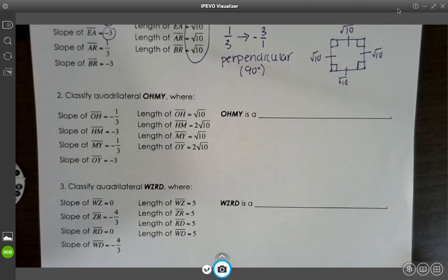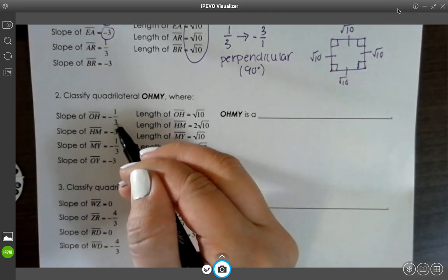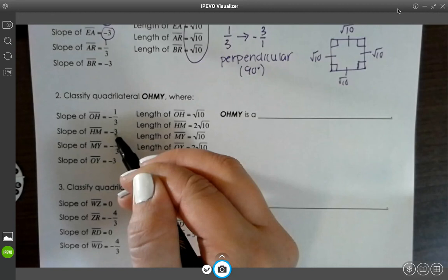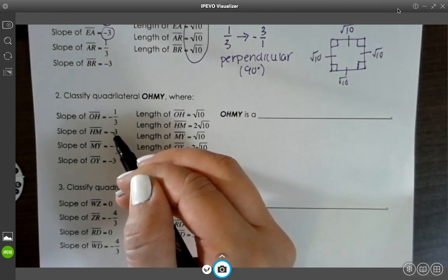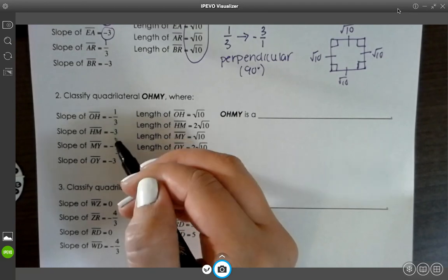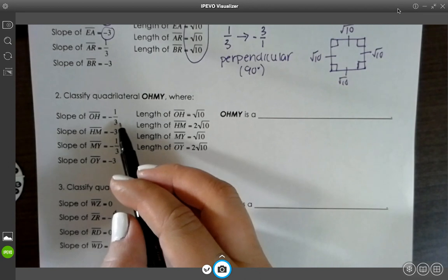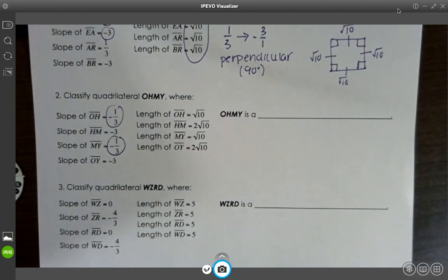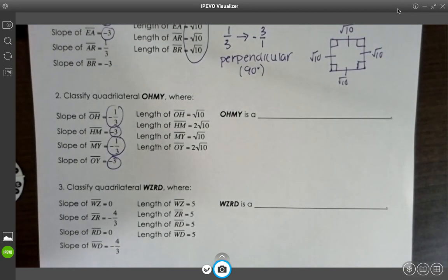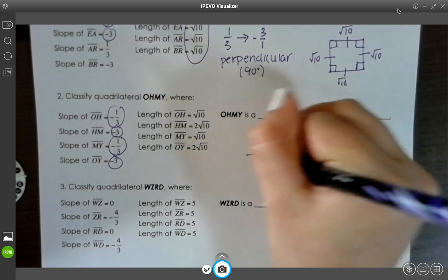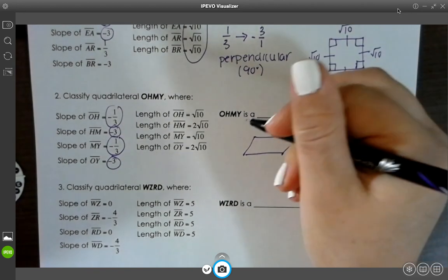Okay, next example. I see negative 1 over 3, and negative 3. Those are not opposite reciprocals. So that means that they are not perpendicular, but I do see that they have the same slopes here, and the same slopes here. So there's parallel lines, but not perpendicular.